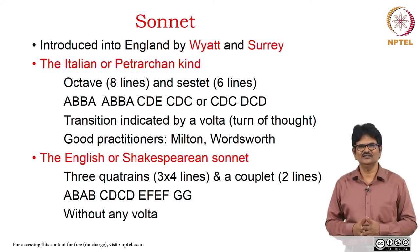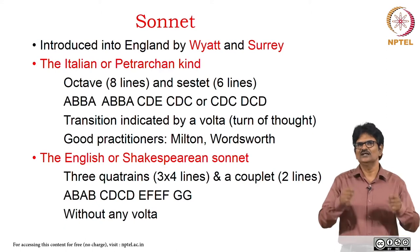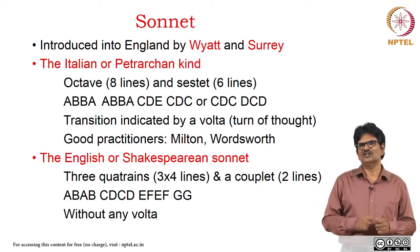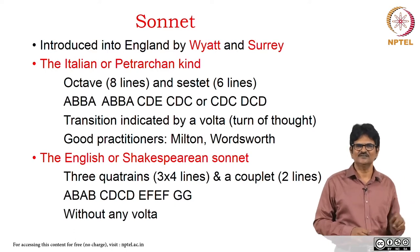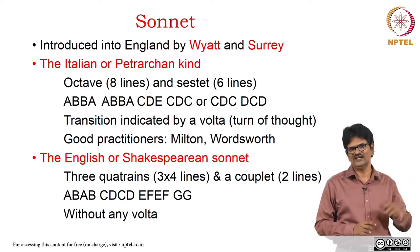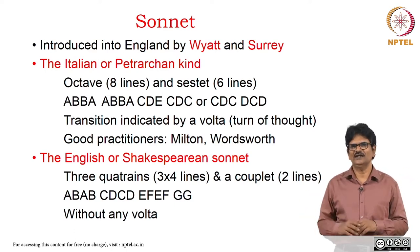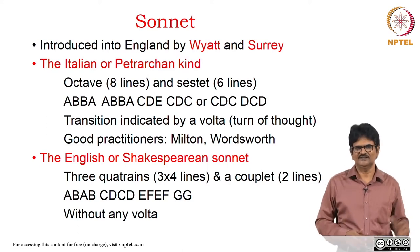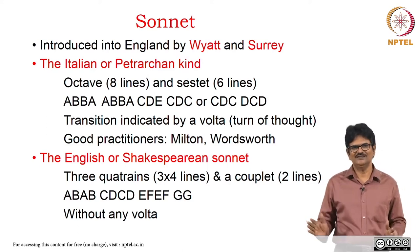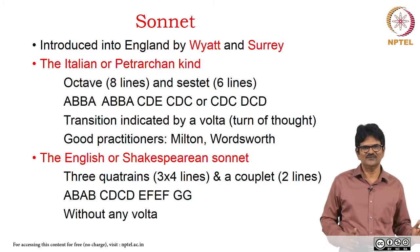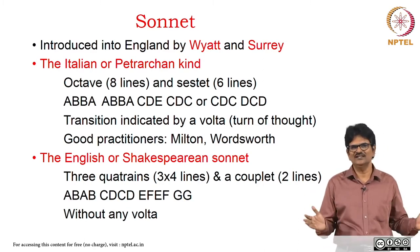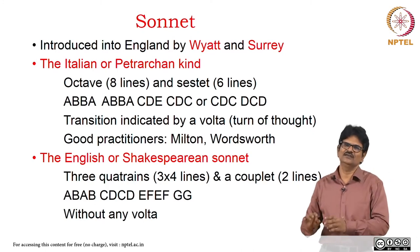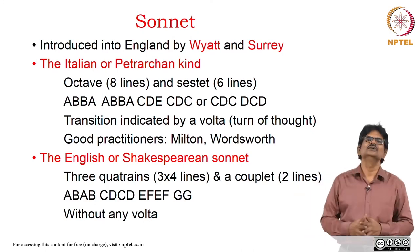We have another kind of sonnet called the English or Shakespearean sonnet. This particular form has three quatrains — that means four lines each — and a couplet at the end, that is two lines. So the rhyme scheme goes ABAB CDCD EFEF GG. Here there is no Volta. The whole idea is developed till the end, and finally a summary is given.